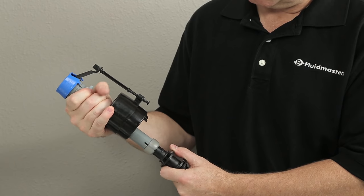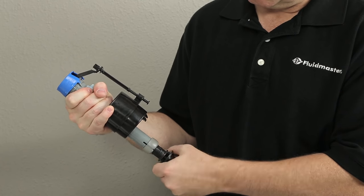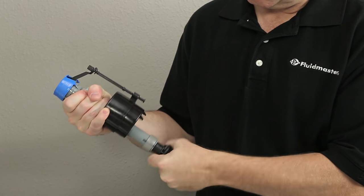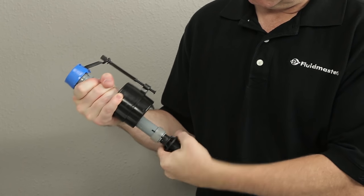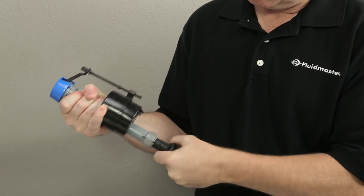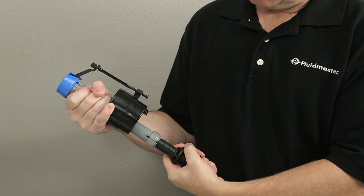To adjust the height of the fill valve, hold the top of the fill valve steady with one hand and turn the shank of the fill valve with the other. Turn the shank clockwise to lower the valve height and counter-clockwise to raise the valve height.